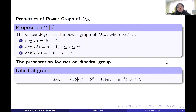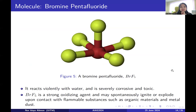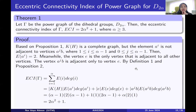This is the group presentation. We only focus on non-abelian dihedral groups, which is why α is greater than or equal to 3. This is an introduction to bromine pentafluoride, and this is the main finding: the Eccentric Connectivity Index of the power graph for dihedral groups.